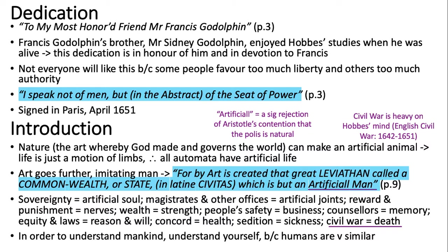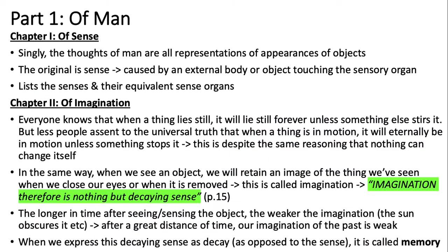He says that in order to understand mankind, you must understand yourself because humans are very similar. And now we get onto Part One. He's going on to discuss his ethical theory — his sense of what makes a man. The thoughts of man are all representations or appearances of objects; the original is sense. This is caused by an external body or object touching the sensory organ, and he lists the senses and their equivalent sense organs.